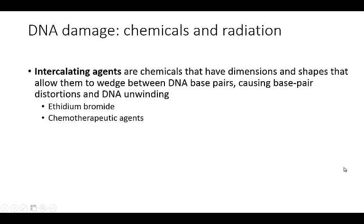Intercalating agents are chemicals with dimensions and shapes that allow them to wedge between DNA base pairs. This causes base pair distortions and DNA unwinding. One very commonly used in the lab is ethidium bromide, which allows DNA to glow under UV light because it changes the structure of DNA. Other chemotherapeutic agents act in a very similar manner.